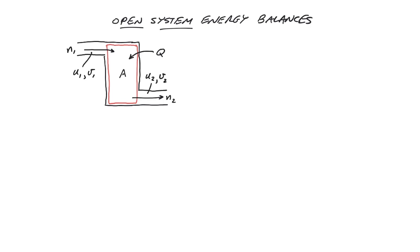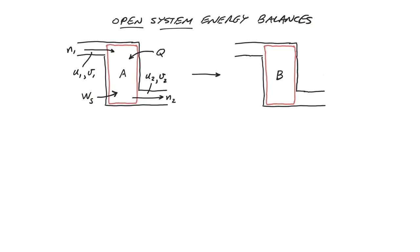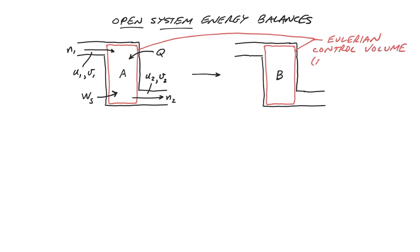After some time, the molecules in the vessel reach a new state B. If we draw the control volume around the molecules in the vessel only, this constitutes an open system, since material is moving in and out. However, if the vessel is rigid, PV work is zero, because we did not deform the control volume. This is an example of what is called an Eulerian control volume — a system boundary with a fixed spatial location and thus fixed volume V0.